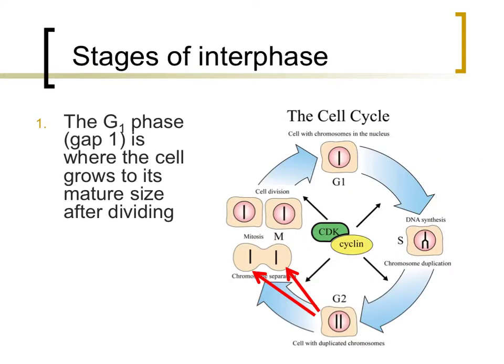When a cell divides, half of the material that was in the original cell is split between two newly formed cells. As a result, these newly formed cells are quite small in size. The first stage that occurs after a new cell is formed is referred to as the G1, or GAP1, phase. The purpose of this stage is to allow the newly formed cell to grow back to its normal size and replenish what was lost during cell division.